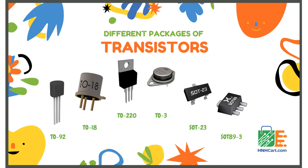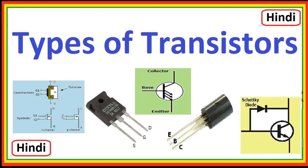Transistors. A bipolar junction transistor, BJT, is a three-layer semiconductor device that can be used as an amplifier, a switch, or a signal modulator. BJTs come in two main types: NPN (negative-positive-negative) and PNP (positive-negative-positive). These types refer to the arrangement of the semiconductor layers.